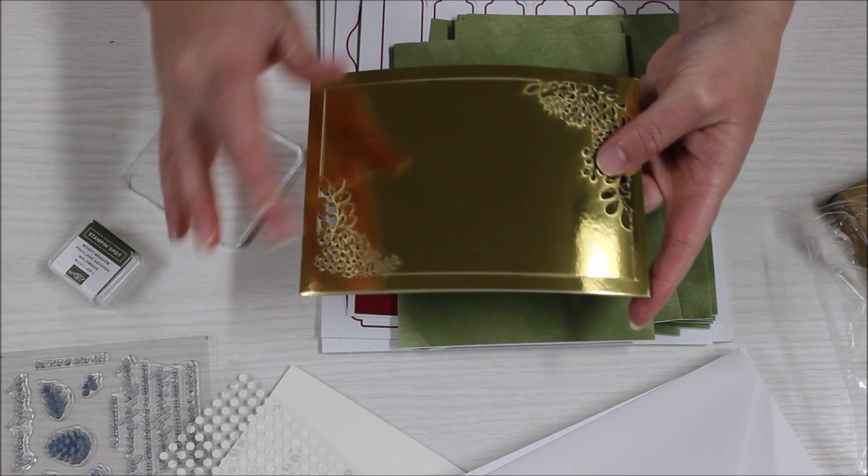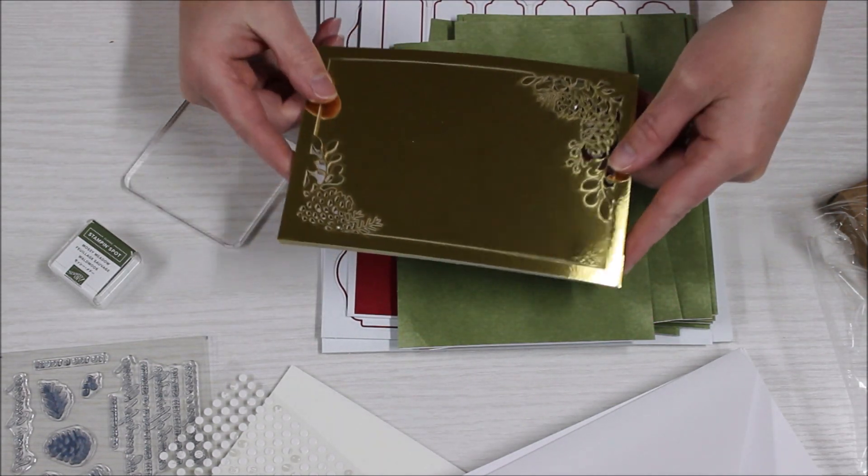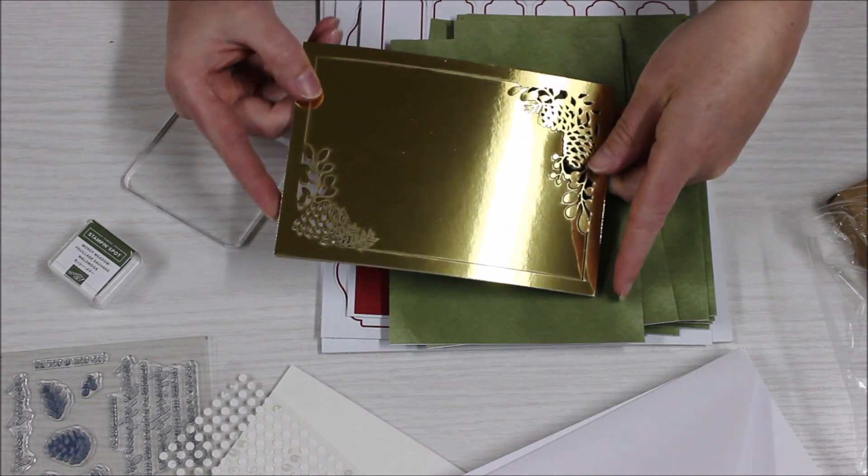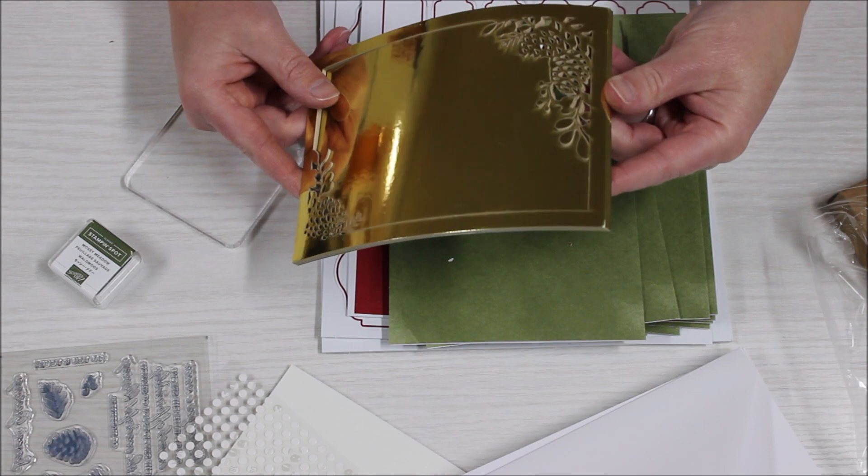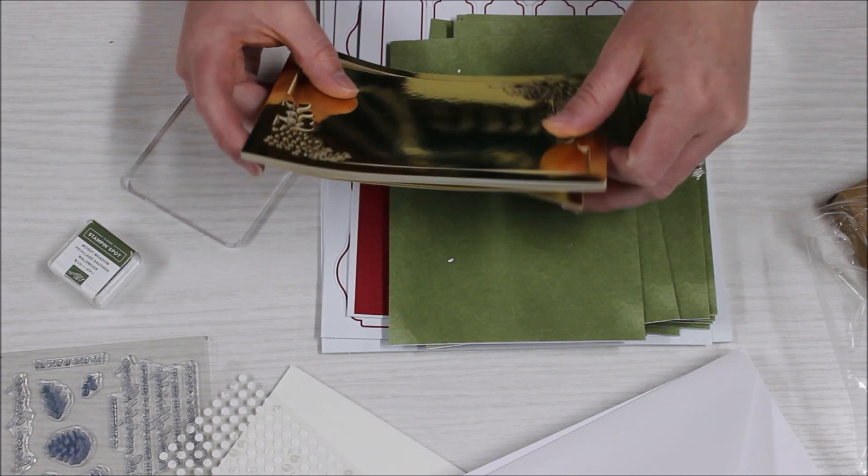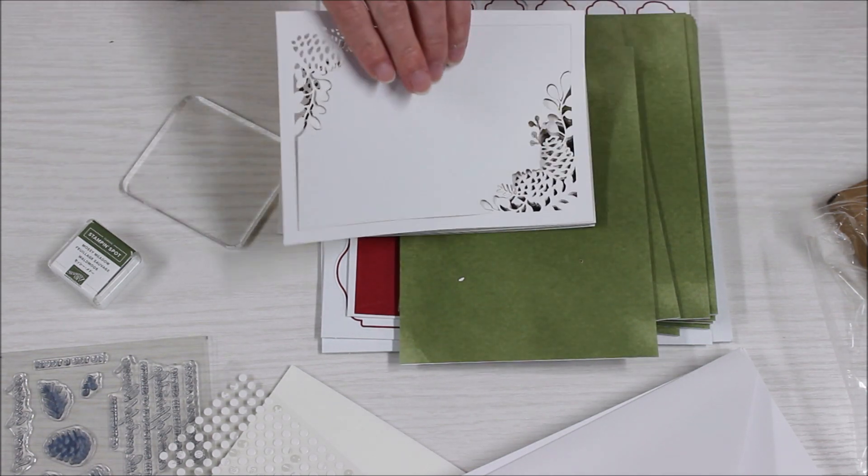The other awesome thing is this solid foil piece in the center can be cut up into pieces to use on other projects. How cool is that? It's like getting a ton of gold foil to use on another project within this kit, and I can't wait to be able to use that.